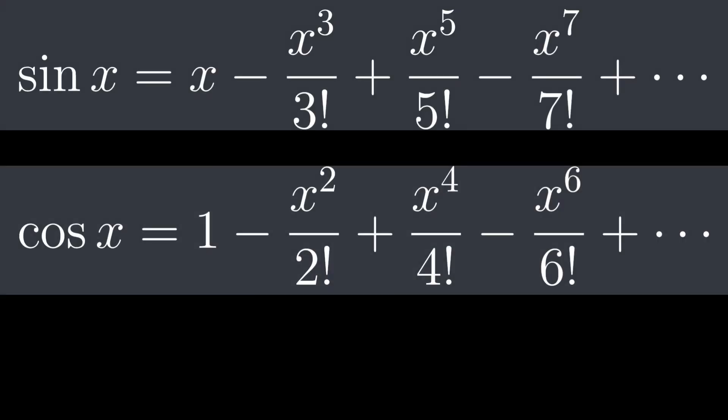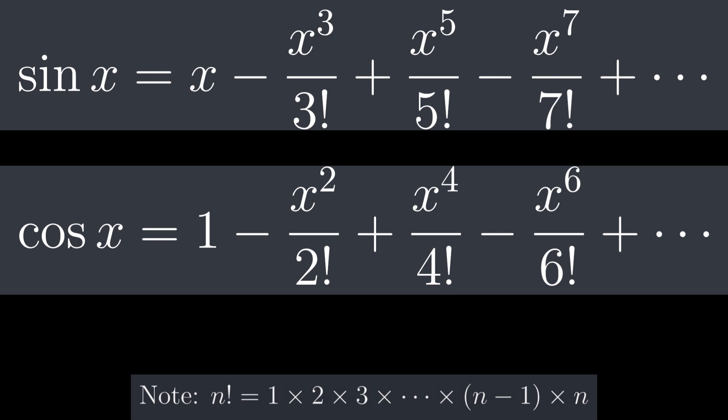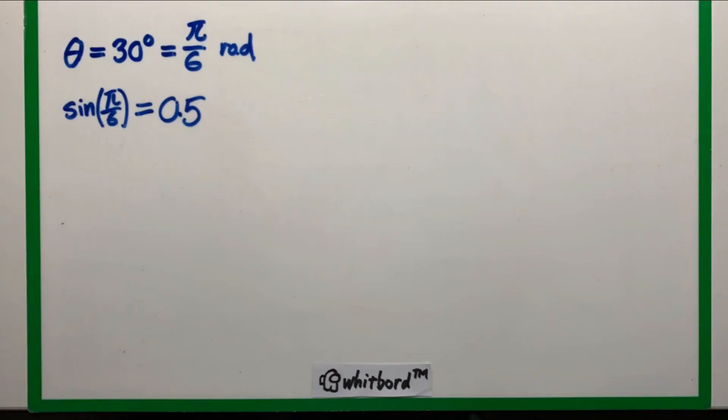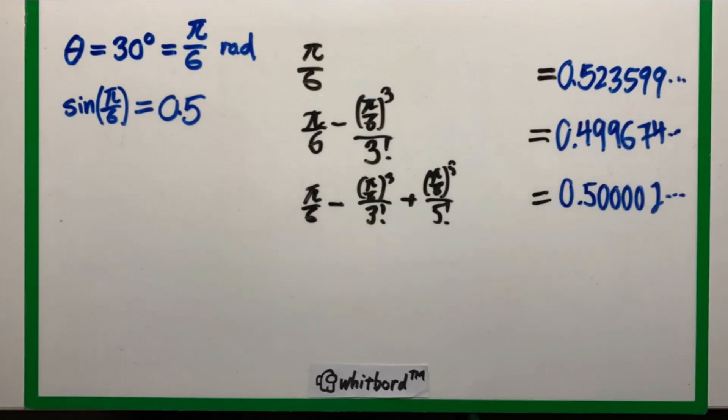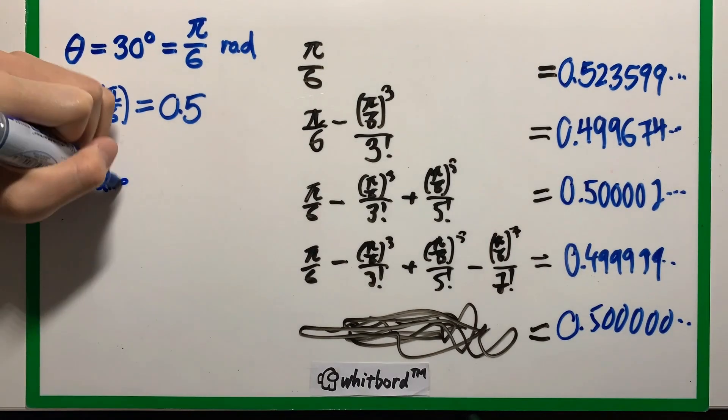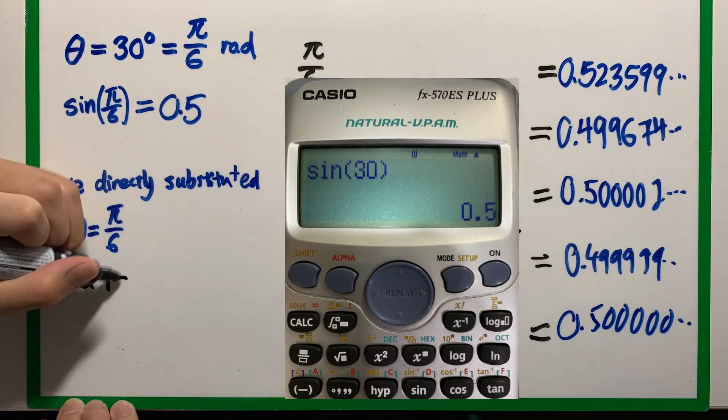And as you can see, it can be expressed with plus, minus, times and divides. Simple. And the radian allows us to easily substitute angle values into this formula. Therefore, the functions can be calculated very precisely.